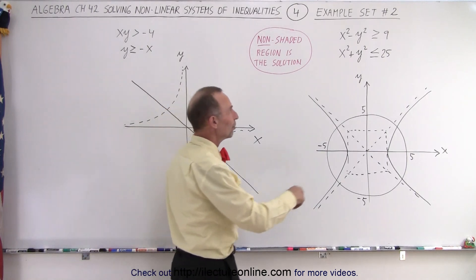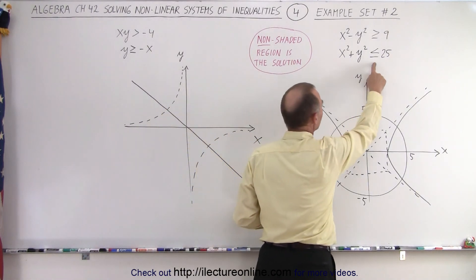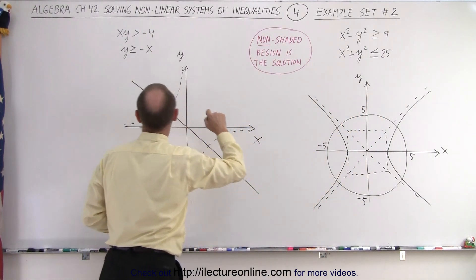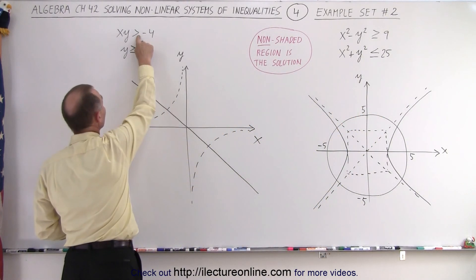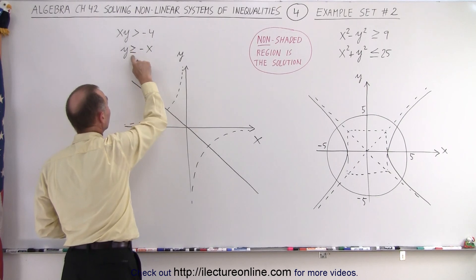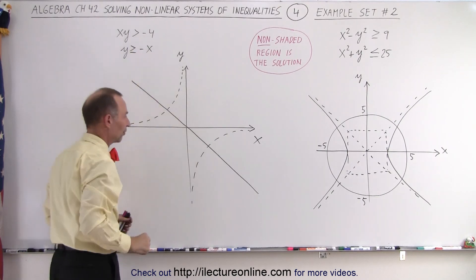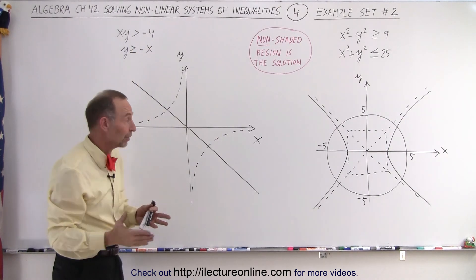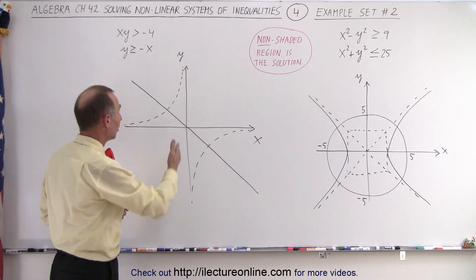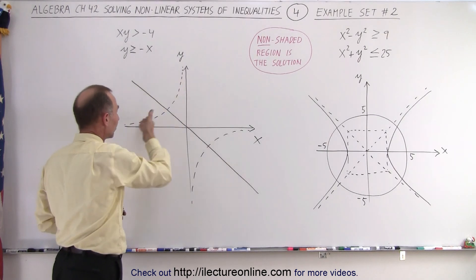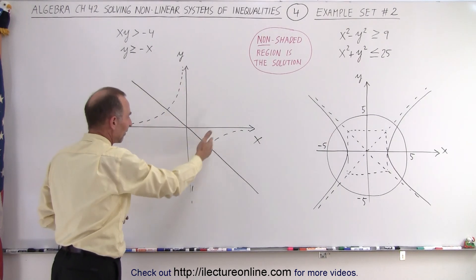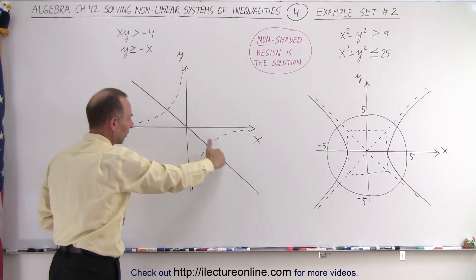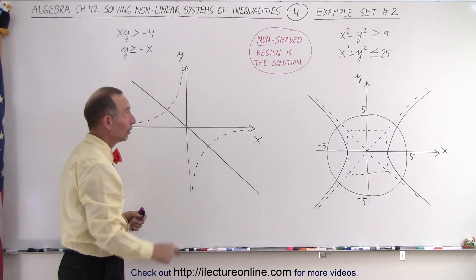In this particular case, the boundaries are included. Over here, the boundary is not included for this function, but is included for this function. That's how we differentiate: when the boundary is not included, we have a dashed line; when the boundary is included, we have a solid line.